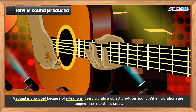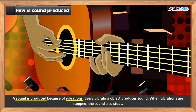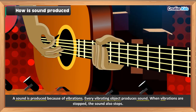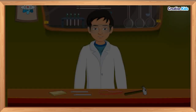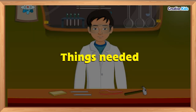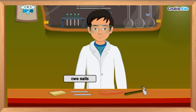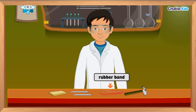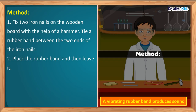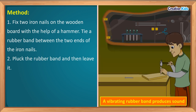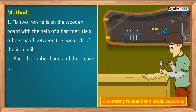So a sound is produced because of vibrations. Every vibrating object produces sound, and when vibrations are stopped the sound also stops. Now let us do an activity to understand this better. For this activity we need a wooden board, two iron nails, a rubber band, and a hammer.